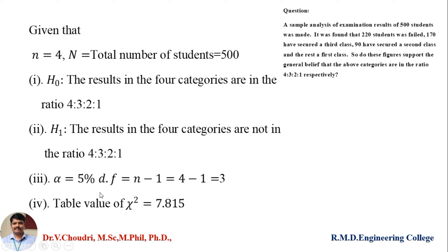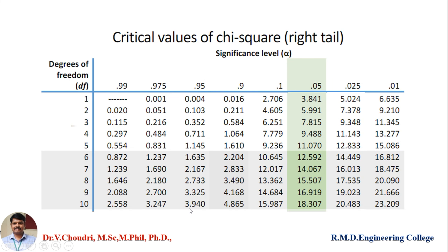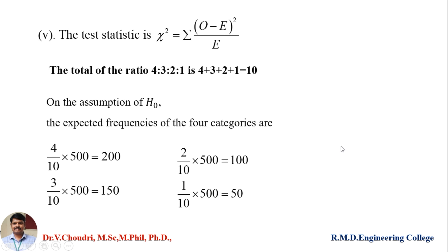How do we find that chi-square equals 7.815? From the chi-square table, for degrees of freedom 3 and level of significance 0.05, the value is 7.815. You may identify this by taking degrees of freedom along the horizontal axis and the level of significance along the vertical axis.